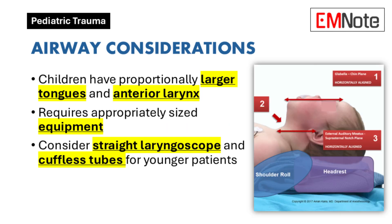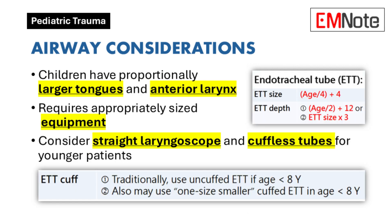Airway Considerations: Managing a child's airway requires a thoughtful approach due to anatomical variations like a proportionally larger tongue and a more anterior larynx. Using appropriately sized equipment is crucial, and medical professionals should be prepared to use a straight laryngoscope and cuffless tubes for younger patients.